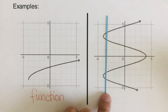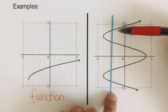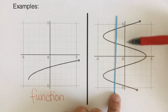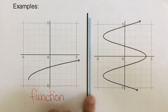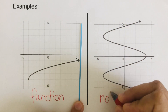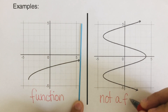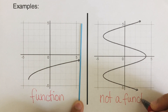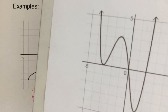As I move this vertical line to the right, it's touching four points. So that means this is not a function, since it's touching four points on this vertical line. The condition is that it should touch only at one point on the vertical line.